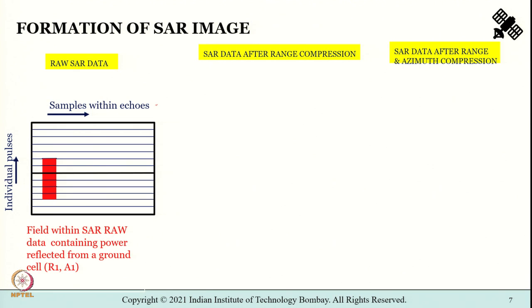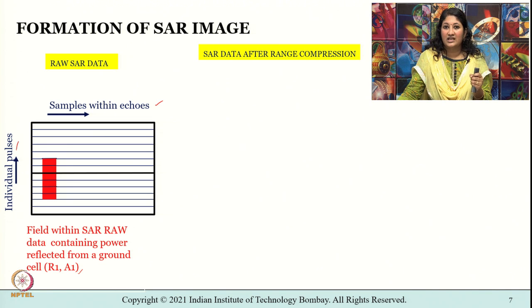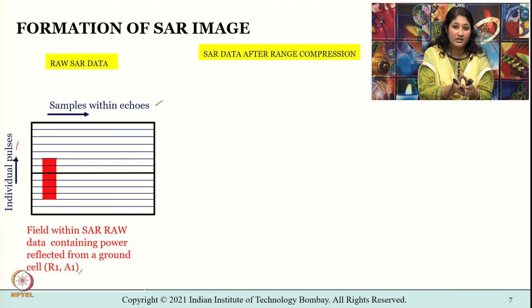To explain this, on the x-axis we have samples within echoes and on the y-axis we have individual pulses. The shaded area in red represents a field within the SAR raw data containing power reflected from a ground cell R1-A1 (range-azimuth). This one ground cell has scattered power in both the azimuth and range direction, which means there is a requirement for SAR data focusing.